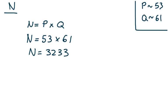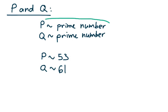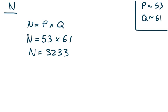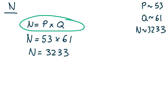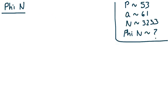To highlight the definitions: P is a prime number, Q is a prime number, and N is simply those two prime numbers multiplied together. These are our three definitions so far, and the three specific values we've created — P=53, Q=61, N=3,233 — are specific to our example.